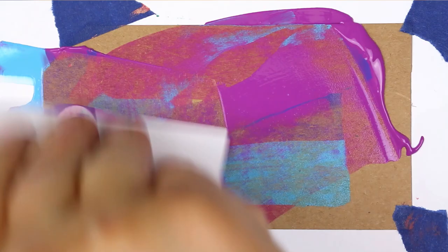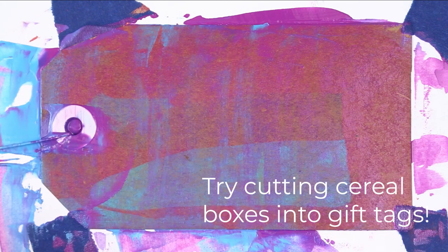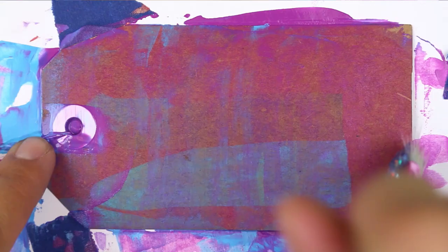You can use this same process to make gift tags as well. Again, just add the paint to a piece of cardstock, cut into the shape of a tag. You can even use just a rectangle of cardstock if that's what you have. I had these pre-made tags in my stash. But again, don't go out and buy anything new. Use what you already have.